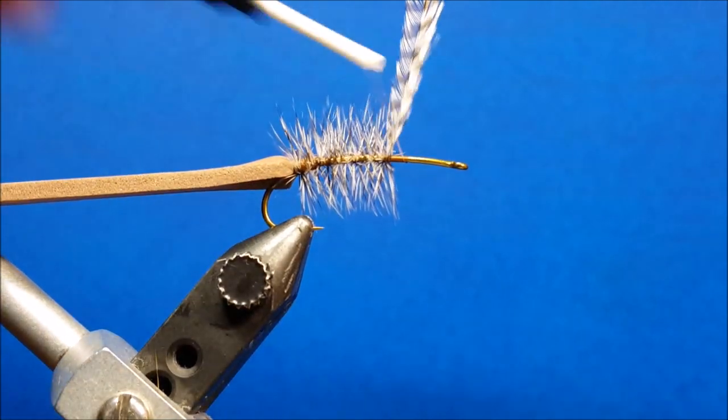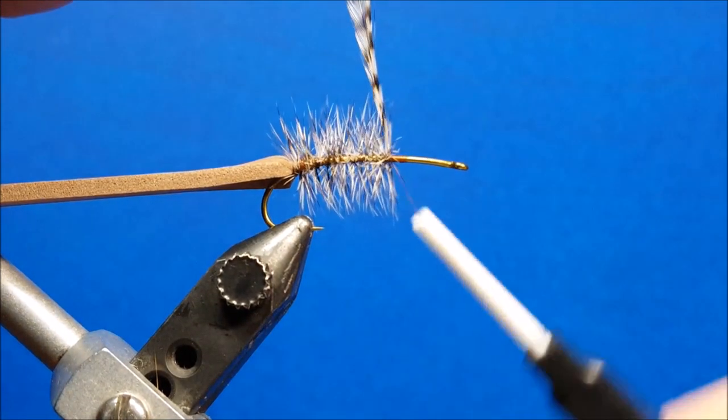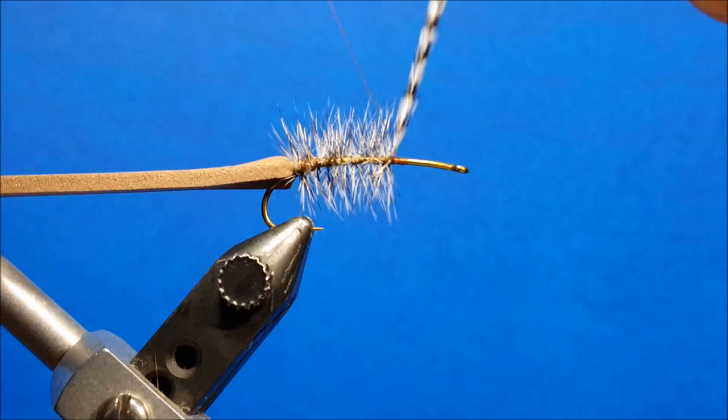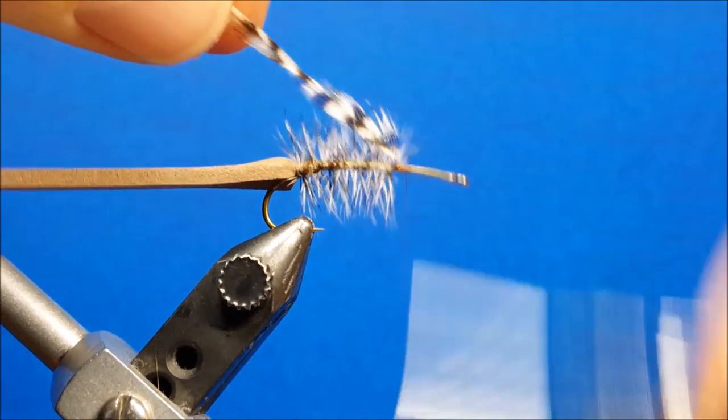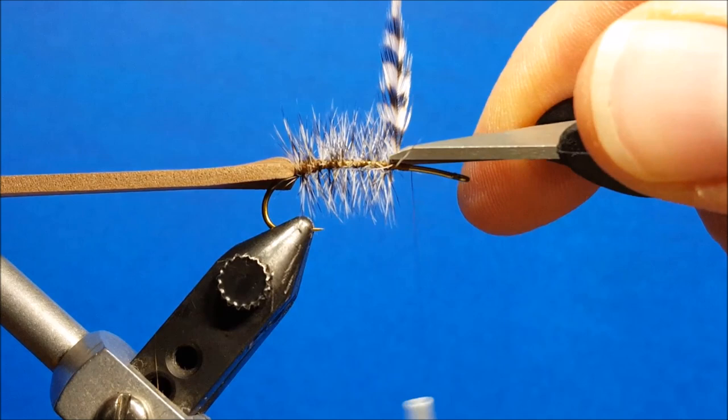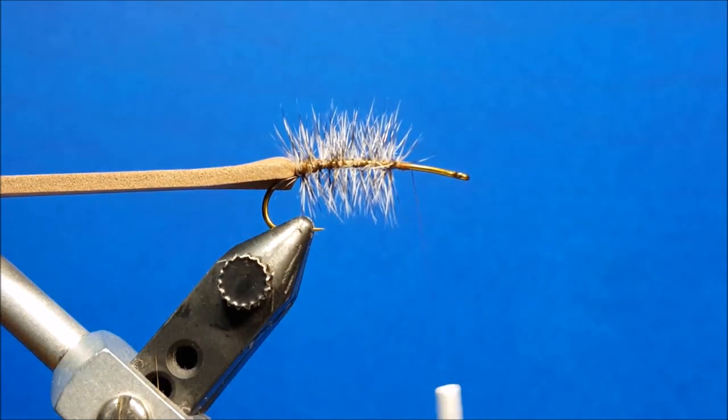This hook that I'm tying on right now is a size six, so pretty bulky guy, bigger terrestrials that we're looking to imitate here. We're going to secure that and snip that extra hackle off.